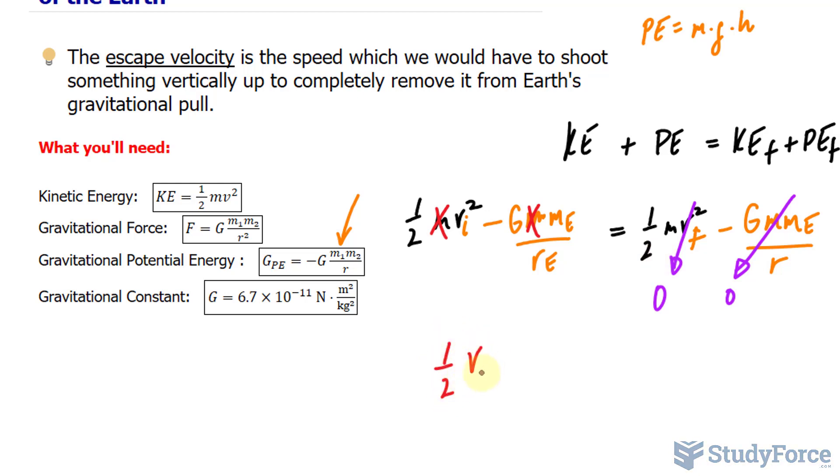We have half the initial velocity, which is technically what we're looking for here, the speed required to escape Earth's gravitational pull. And I'll bring this term over to the other side, where I have capital G, the mass of the Earth, over the radius of the Earth.